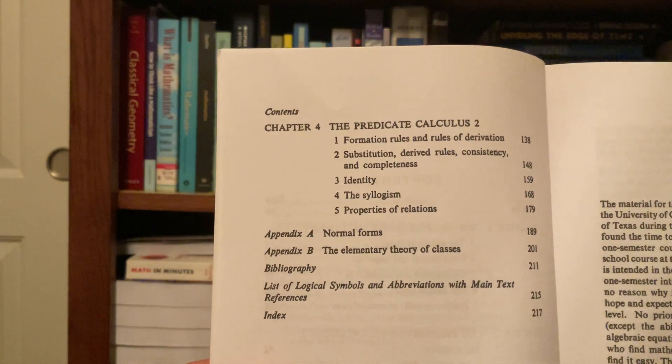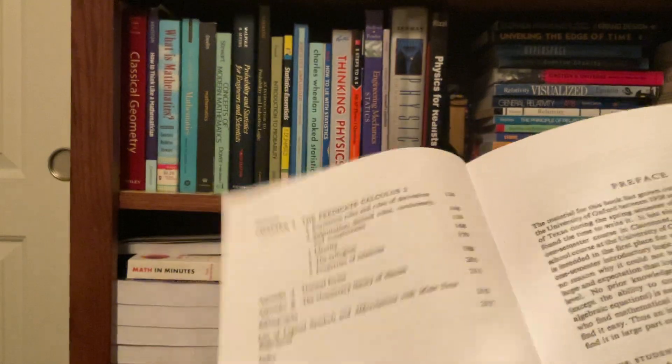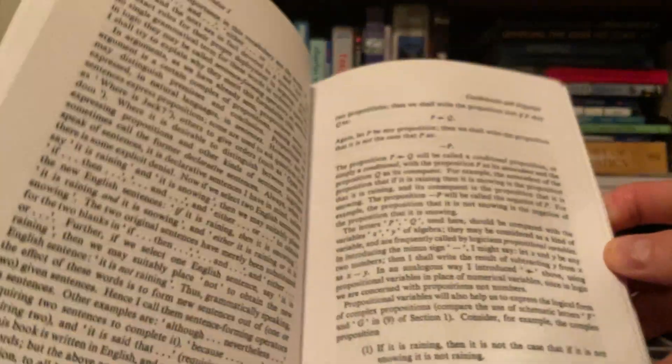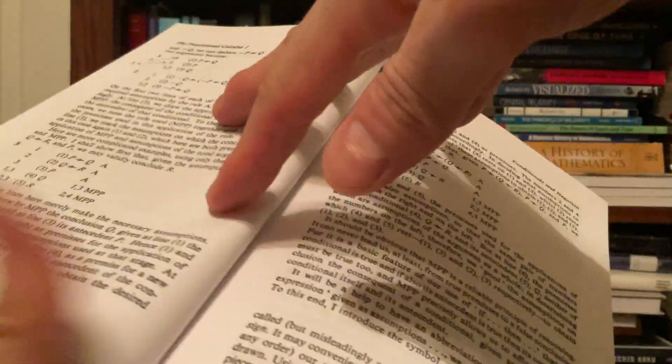And then you have some appendixes: normal forms, the elementary theory of classes. And if you look in it, it's a zero-fluff textbook. It doesn't have all these nice charts and tables. There are exercises in this book, so you can definitely practice with this textbook.